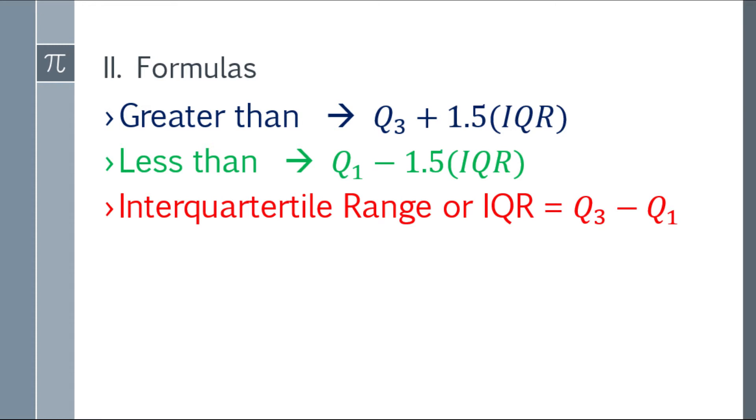Pangalawa, yung less than, that will be Q1 or quartile 1 or first quartile, minus mo siya sa the quantity 1.5 multiply mo siya sa IQR. At yung interquartile range, ito yung IQR, will be yung Q3 minus mo ng Q1. Ngayon yung para makuha yung IQR or the interquartile range.